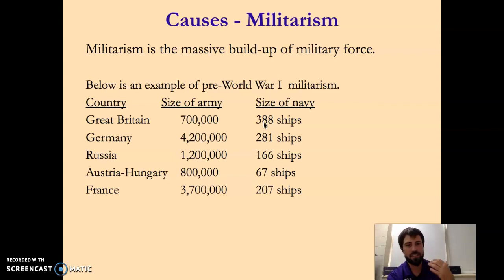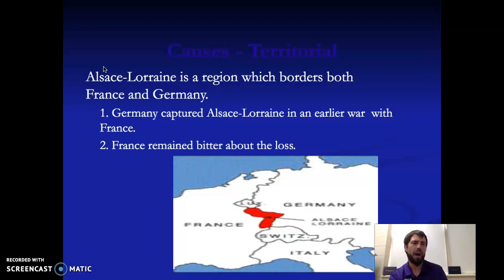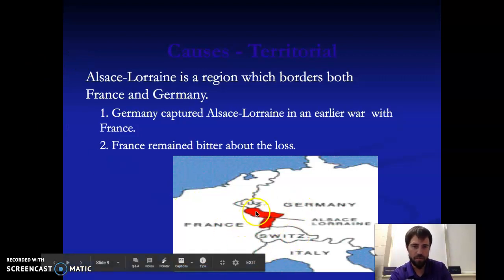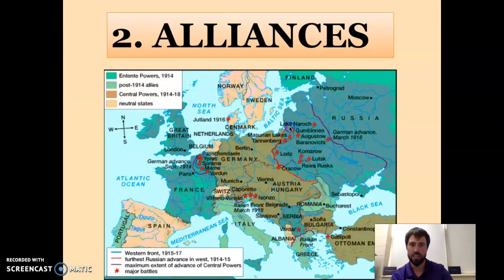They're competing back and forth — who can have the most weapons, the most men, the most naval ships. This competition makes them proud, makes them excited — they want to go to war. Also, prior wars glorified war even more. Germany and France had a war; France lost a chunk of land called Alsace-Lorraine. Because they lost it, they're now mad at Germany and want an opportunity to go to war with Germany to get their land back. That's militarism too — this desire for war to reclaim lost land.